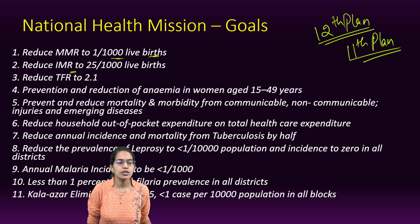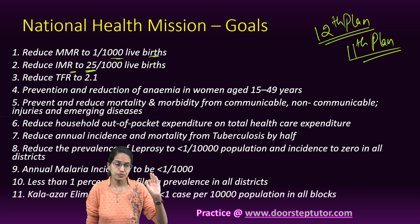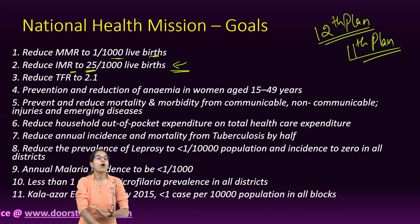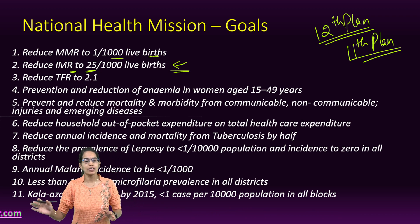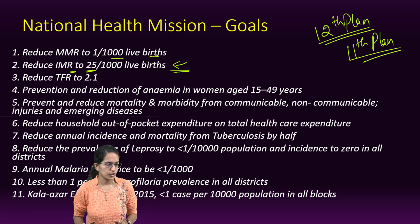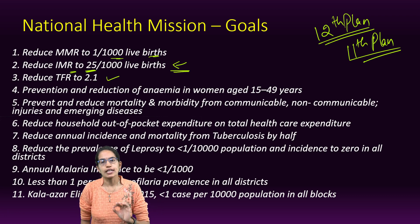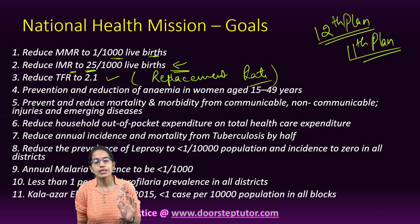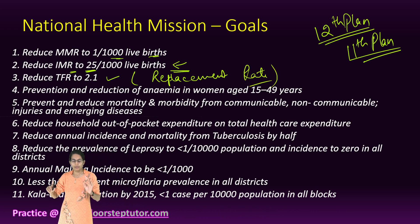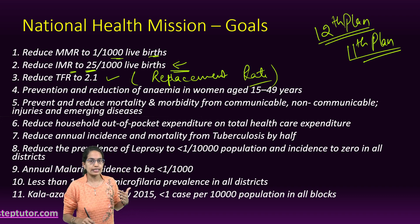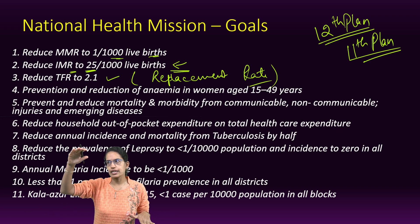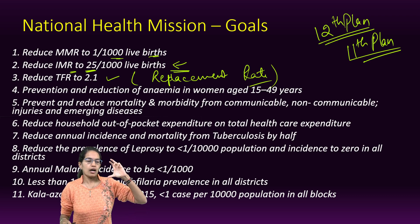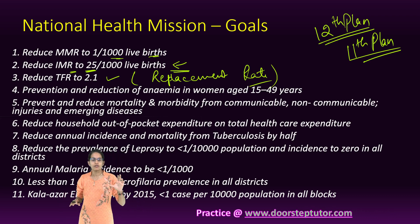The goals included reducing the Maternal Mortality Rate to 1 per 1,000 live births, reducing Infant Mortality to 25 per 1,000 live births, and reducing the Total Fertility Rate to 2.1 — known as the replacement rate. A high TFR indicates steep population growth, so reducing it aims to stabilize population growth. Reduction of anemia in women aged 15 to 49 years was also targeted.